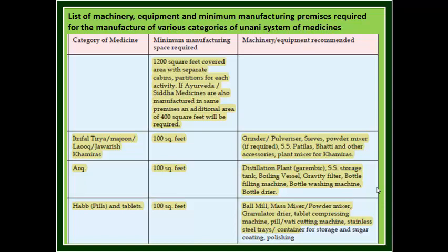Category 3: Hub, also known as a tablet. Space required: 100 square feet. Recommended equipment: ball mill, mass mixer, powder mixer, granulator, tablet compressing unit, steel tray, etc.